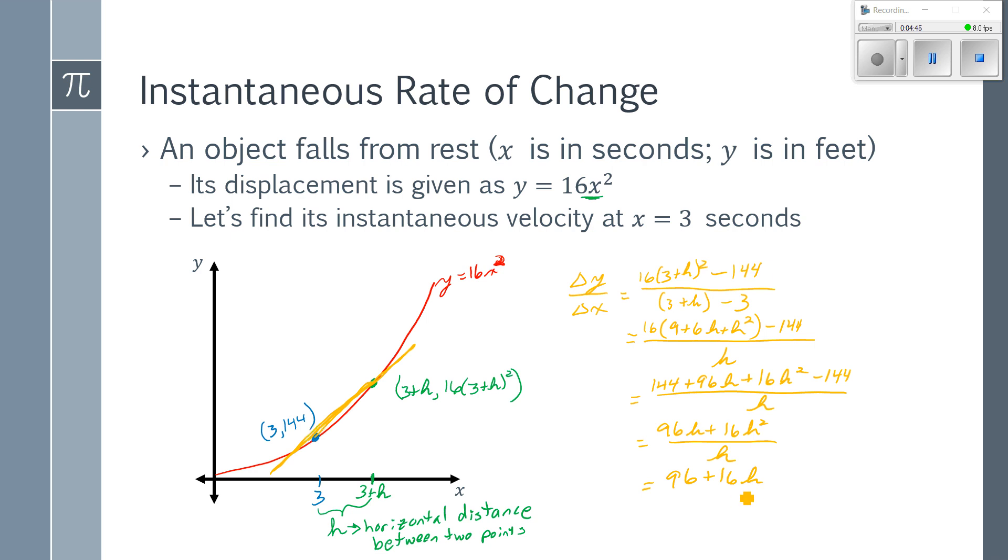So, what this is actually telling me is that my slope is going to depend upon how far away my green point is from the blue one. Because, remember, h is the distance between those two points, the horizontal distance.